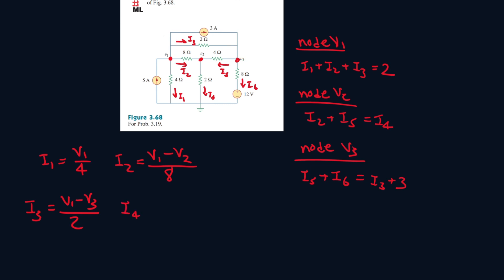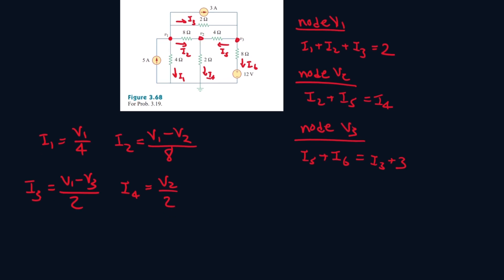We have I4, which goes from V2 to 0, all over 2. Then we have I5, it goes from V3 to V2, so V3 minus V2 all over 4. And then we have I6, it goes from V3 to 12, this point is 12 volts, so V3 minus 12 all over 8.